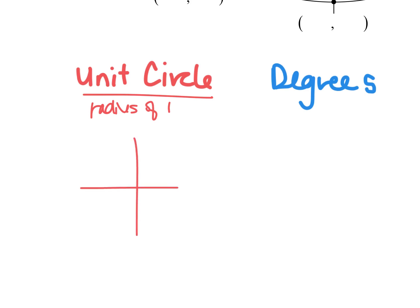So if I have a coordinate plane here my circle is centered at the origin and all of these radii that I draw are all equal to one.